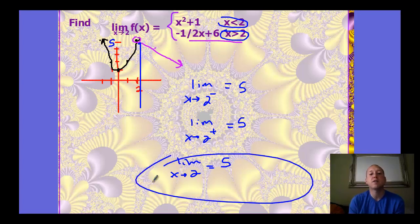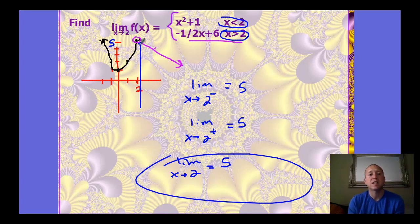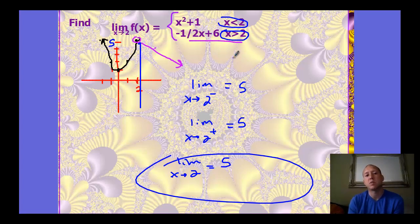This piecewise function does have a limit of 5 because the left and right-hand limits are both equal, even though the function value does not exist at that point. That wraps up 11-2A — these are the different algebraic techniques you need to use to help find the limit.